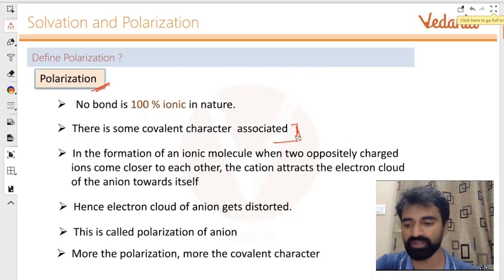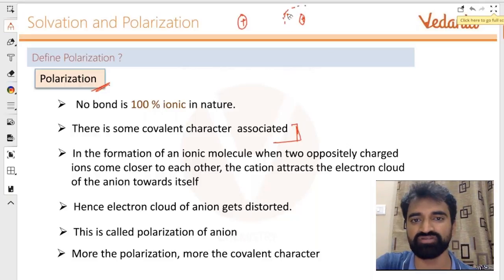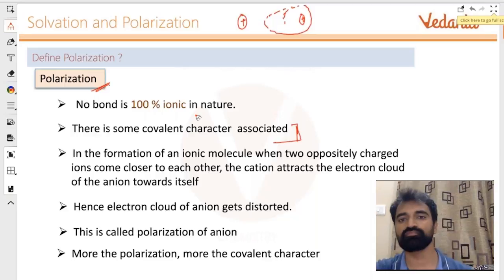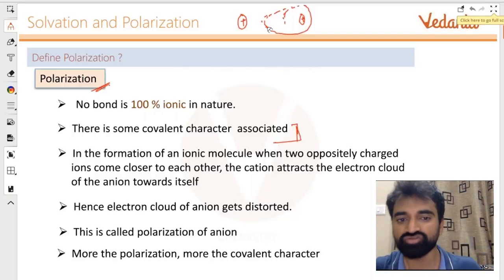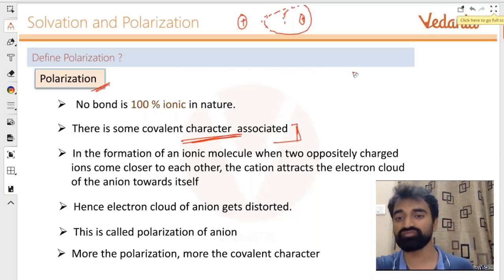So I get an entity which looks something like this: this is the cation, this is the nucleus of the anion, and these are the electrons. The electrons stretch something like this, and therefore there is some electron density in between the two ions. That is how we define covalent bonds. In covalent bonds there are two atoms with electrons in between, so there is some covalent character associated with ionic bonds. That is what we call polarization.